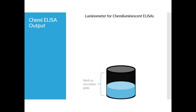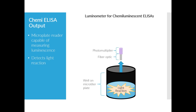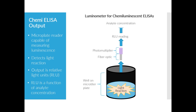Chemiluminescent ELISAs require a microplate reader capable of measuring luminescence to detect the light reaction between the enzyme label and substrate. The light given off by the reaction in the wells is transmitted by a fiber optic cable to a photomultiplier in the reader, which outputs relative light units or RLUs. Depending on the plate reader, RLUs can range from hundreds to millions. This spread of units allows users better analytical sensitivity and a broader dynamic range by giving more separation between points, and reduces the limitations of optical density readings from a standard microplate reader.